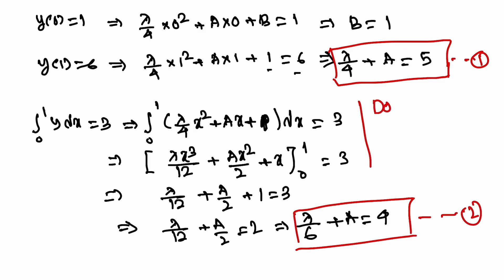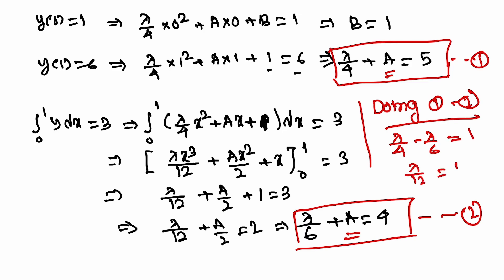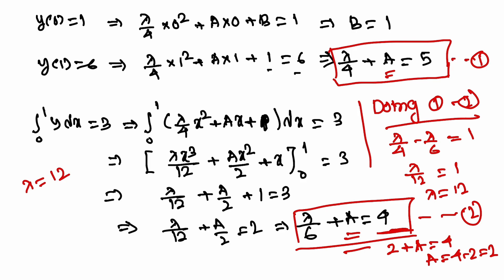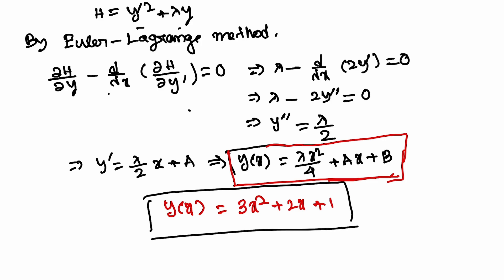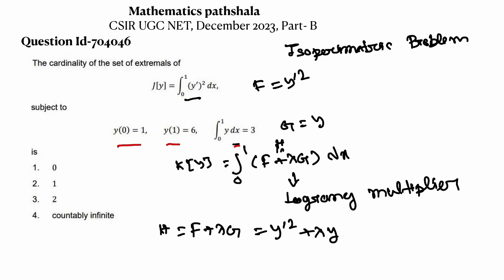Subtracting equation 2 from equation 1, the a terms cancel: lambda over 4 minus lambda over 6 = 5 minus 4 = 1. This gives lambda over 12 = 1, so lambda = 12. Substituting lambda = 12 into equation 2: 2 plus a = 4, so a = 2. And from y(0) = 1, b = 1. The extremal becomes y(x) = 3x-squared plus 2x plus 1, which is unique.